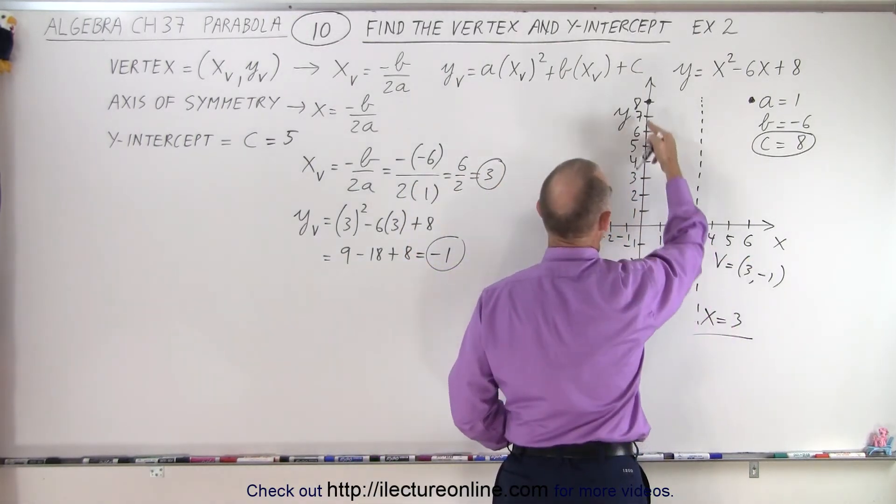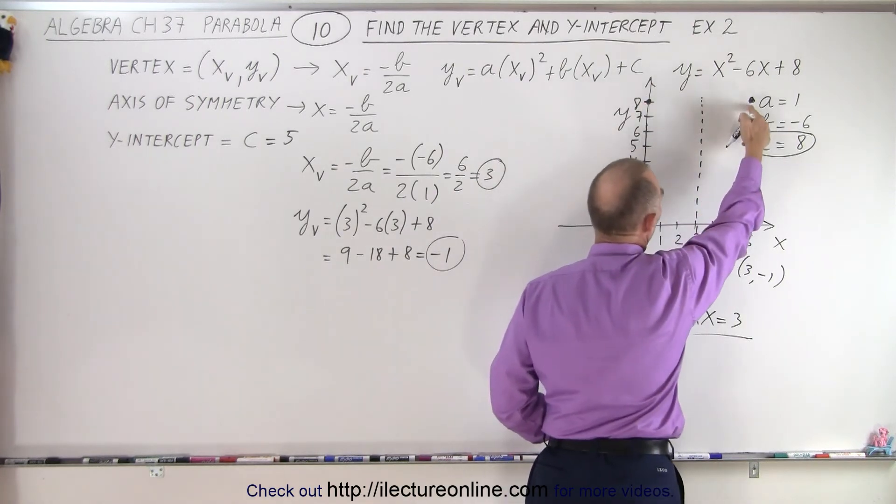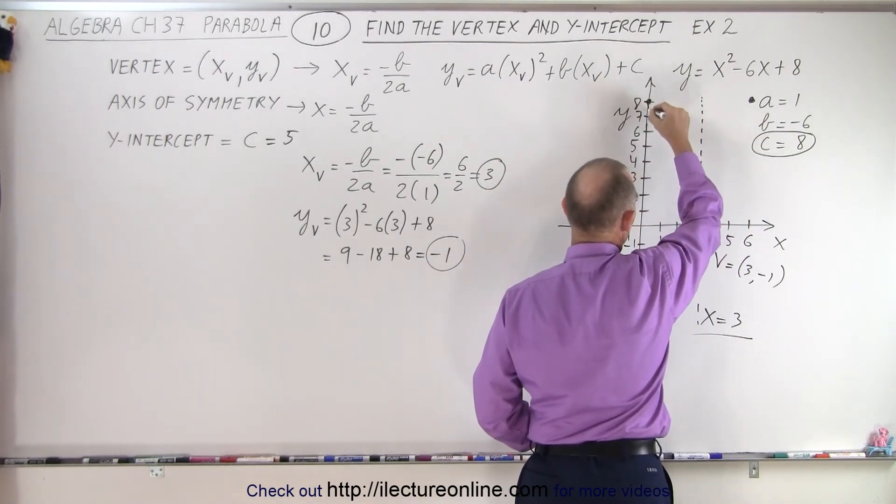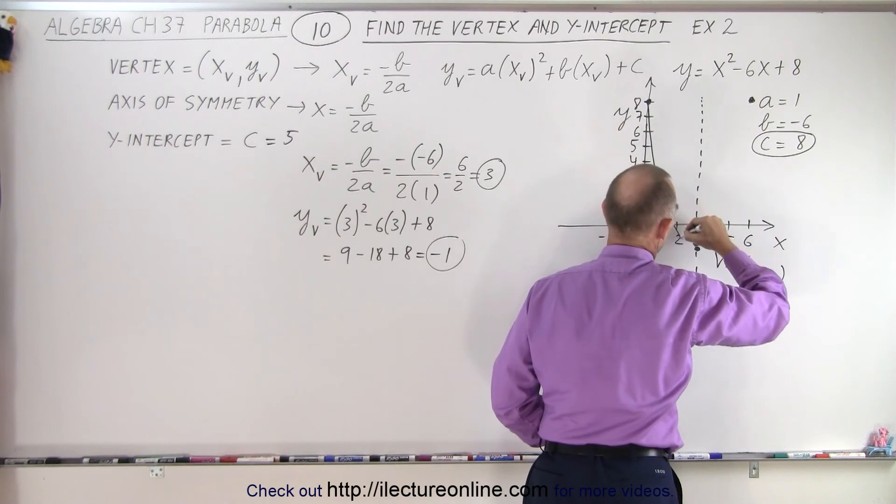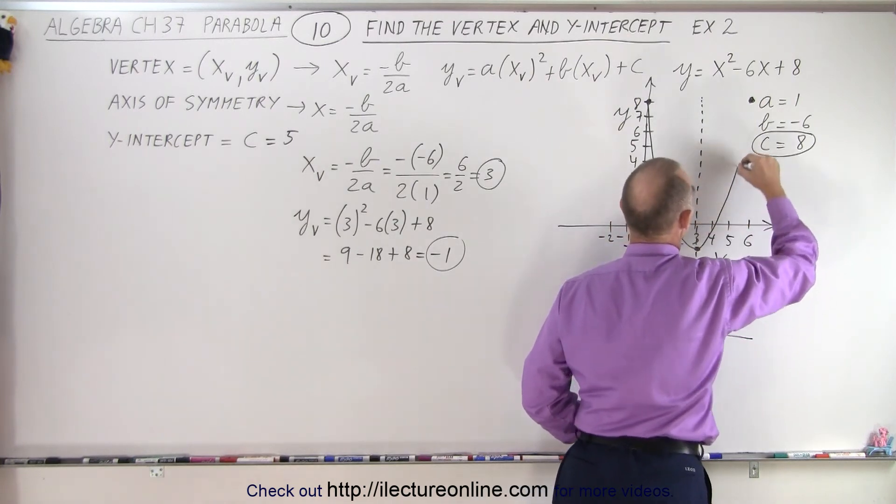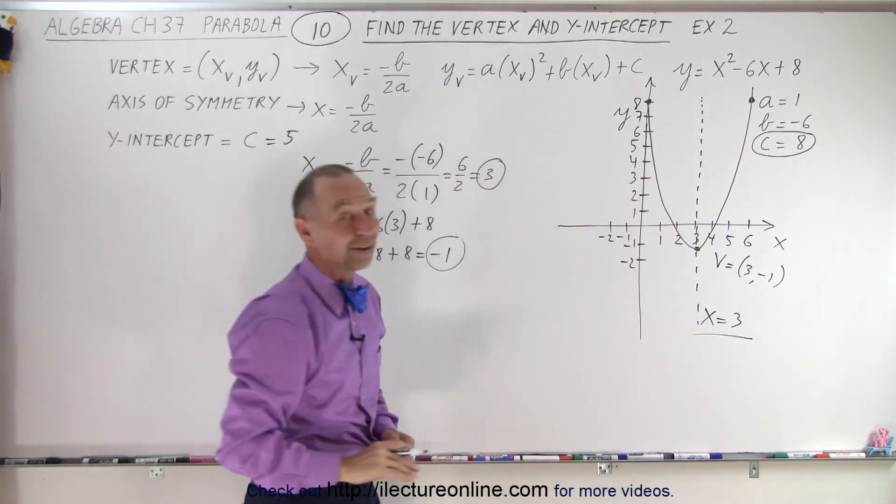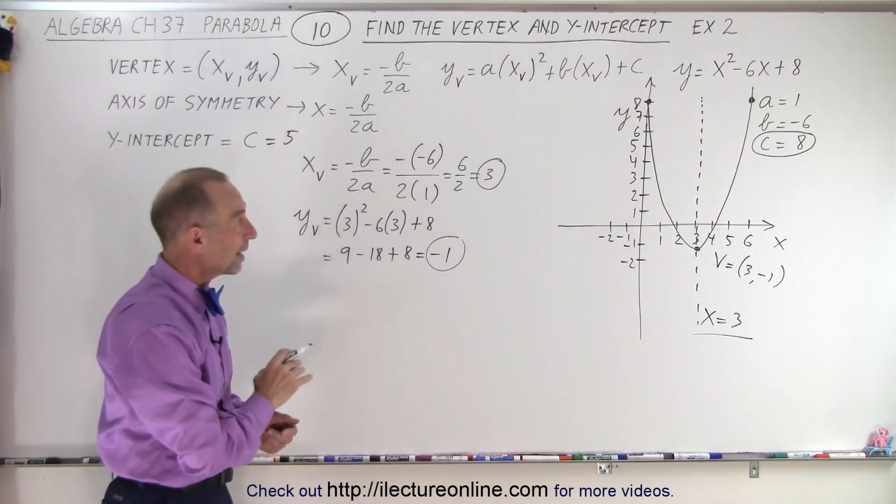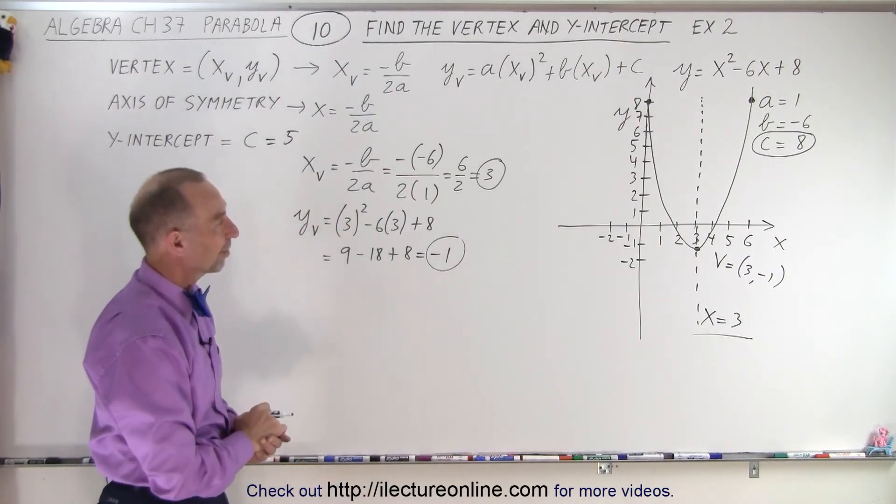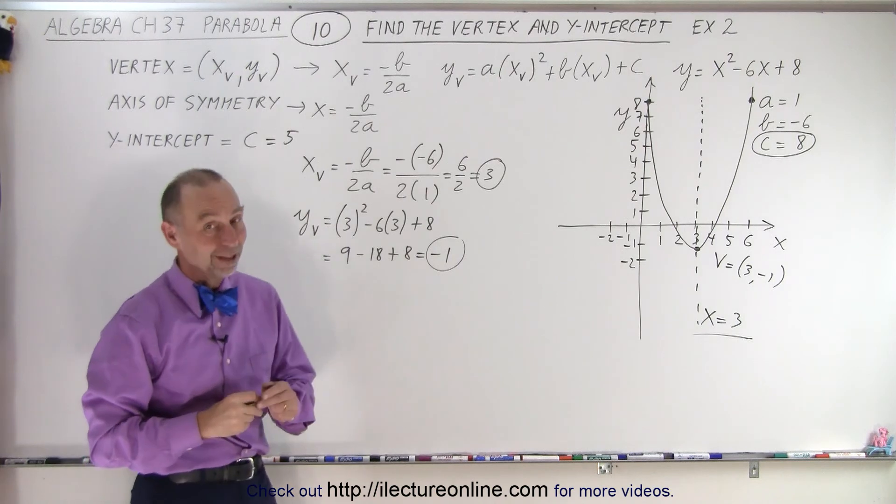Here's the vertex. It opens upward. It goes through 8 here, and it goes through 8 there. So we can connect the dots, like so, and back up to here. And there's a nice graph representing the equation, y equals x squared minus 6x plus 8. And that is how it's done.